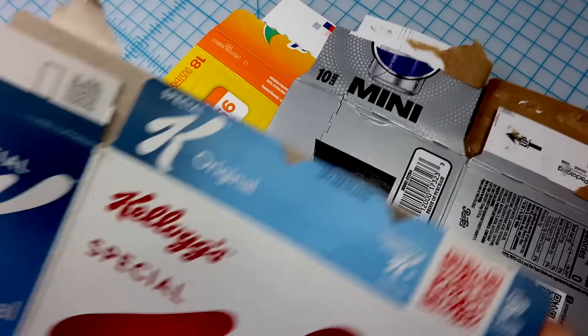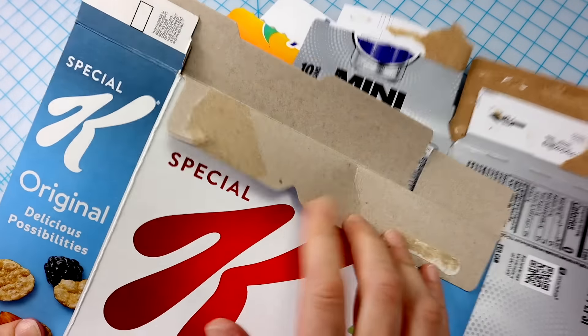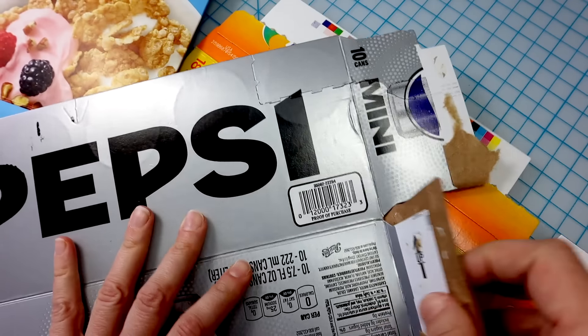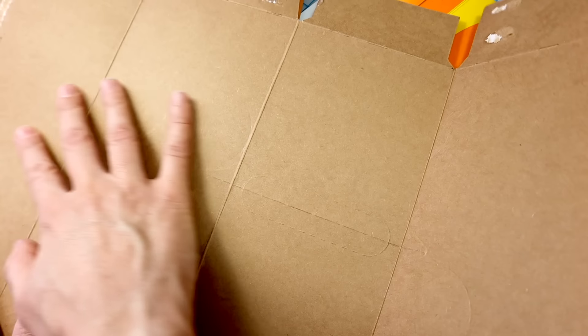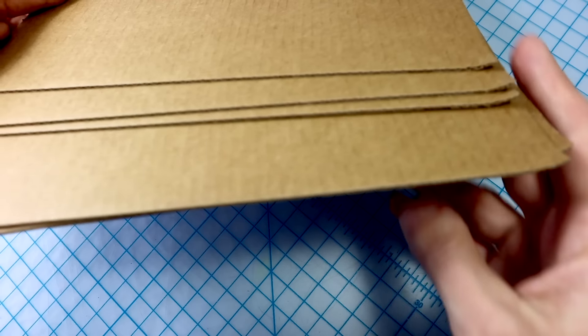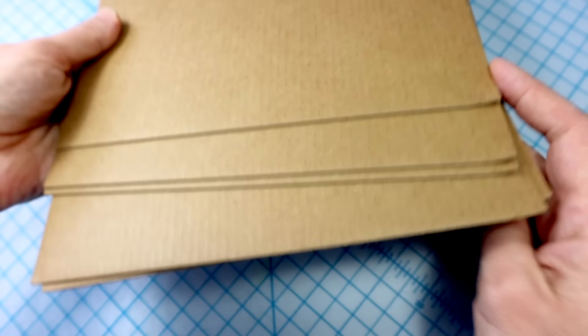For this project, go to your recycling bin. Look for packaging from cereal, soda, or other household items that's made from thin cardboard, or look for the thinnest cardboard box. You can also purchase thin sheets of cardboard online. So let's get to making.